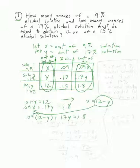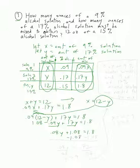Distributing: 0.09 times 12 is 1.08, minus 0.09y plus 0.17y equals 1.8. Combining like terms gives 0.08y plus 1.08 equals 1.8. Subtracting 1.08 from both sides gives 0.08y equals 0.72. Dividing by 0.08 gives y equals 9.